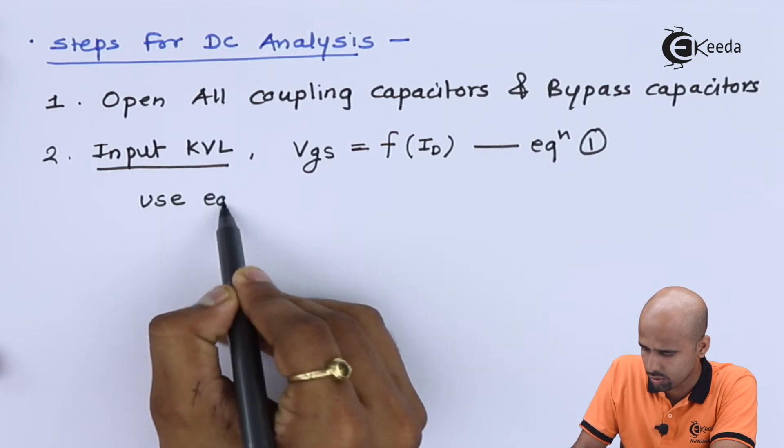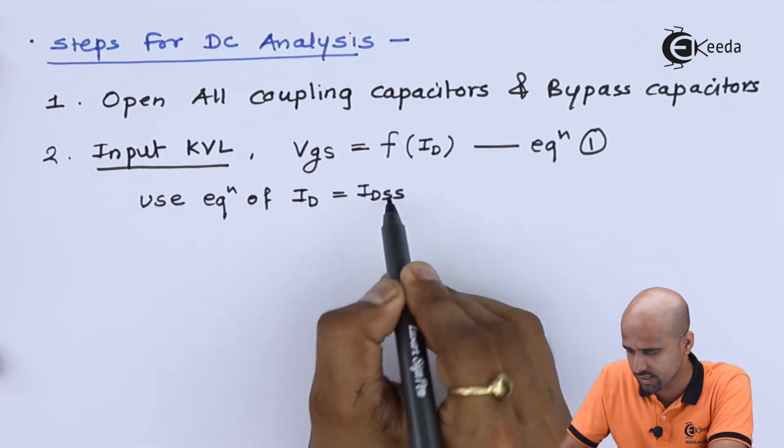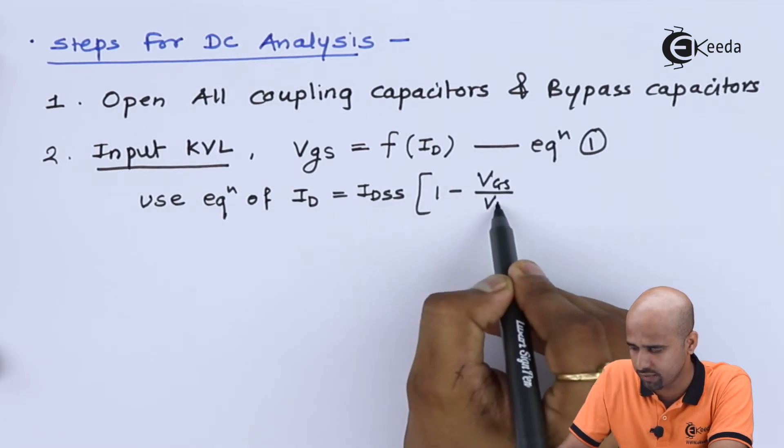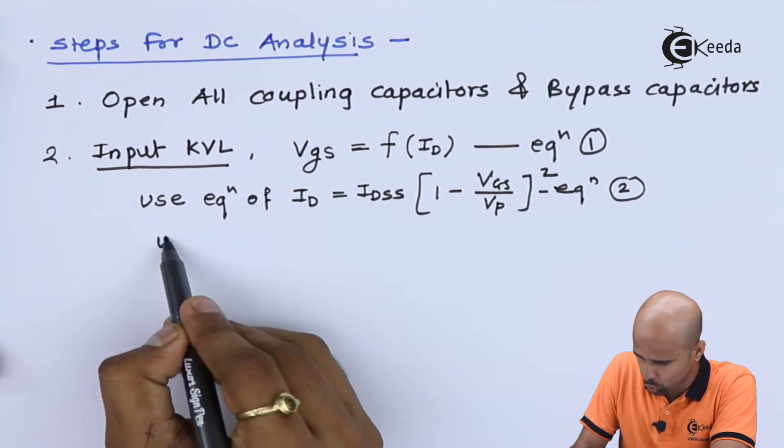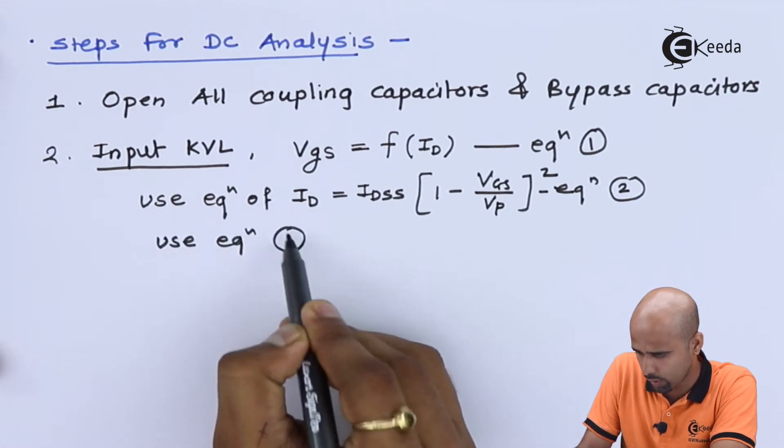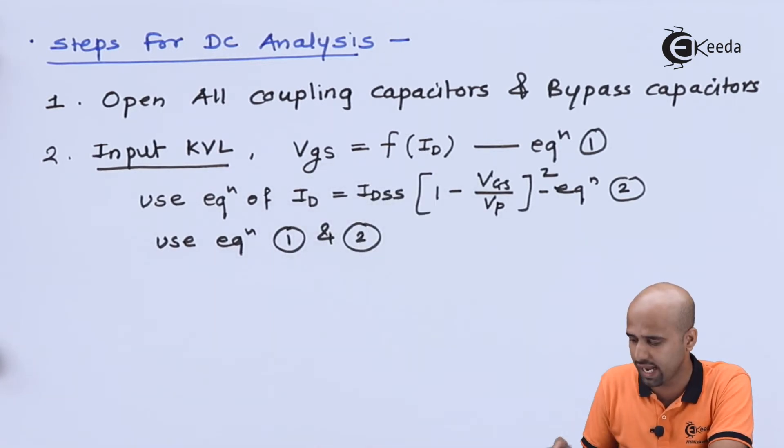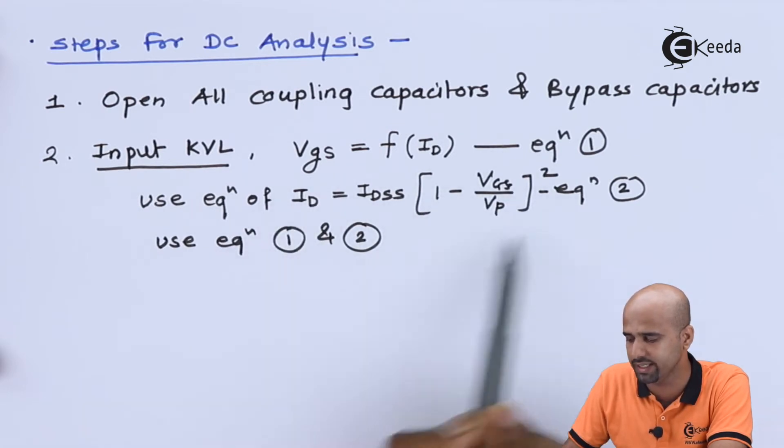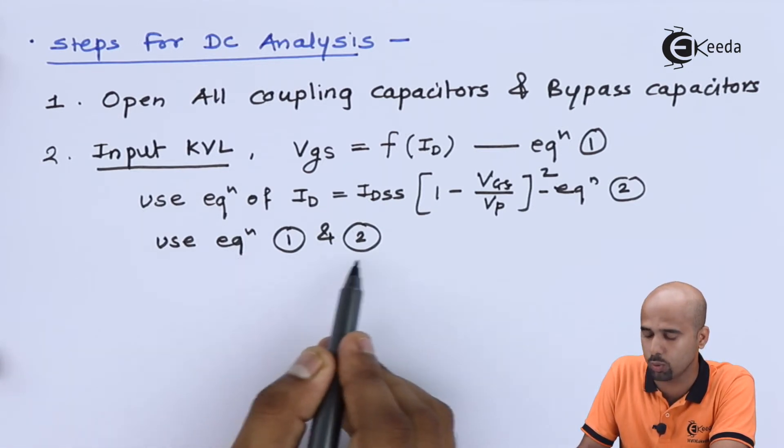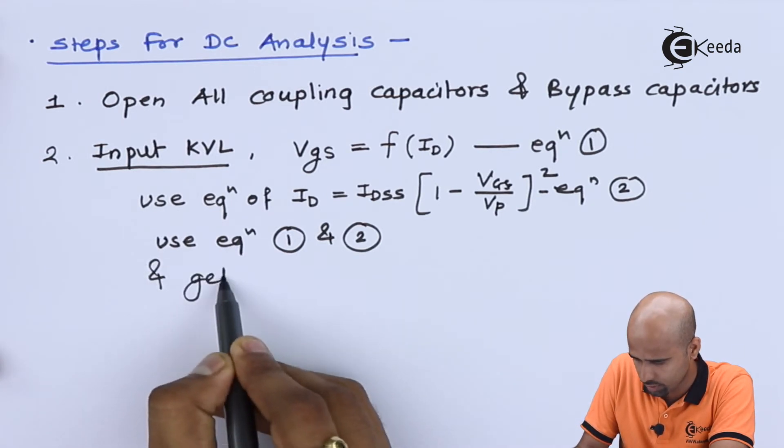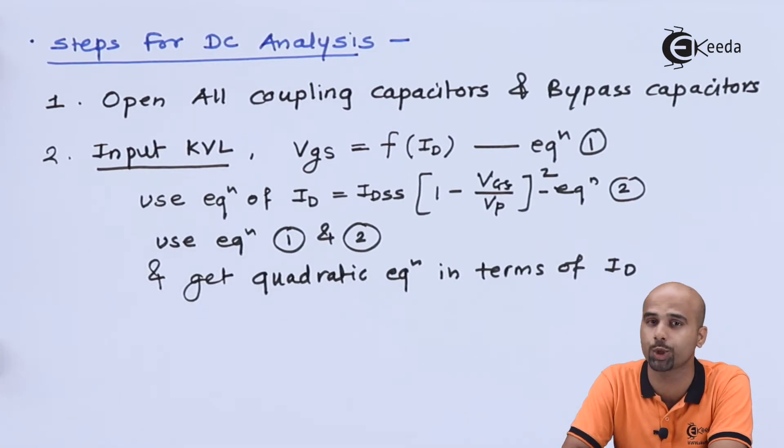And the second equation, use equation of ID, and that is equal to IDSS multiplied by 1 minus VGS divided by VP the whole square. Equation number 2. Use equation number 1 and 2. For example, if VGS is a function of ID, can I put the value of VGS over here such that I will be getting equation in the form of ID only. So we can say that use equation number 1 and 2 and get quadratic equation in terms of ID.